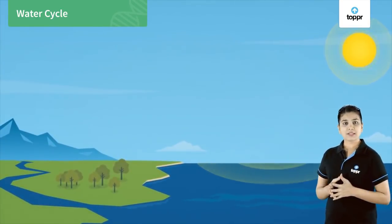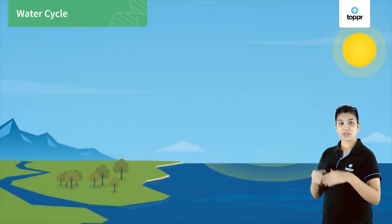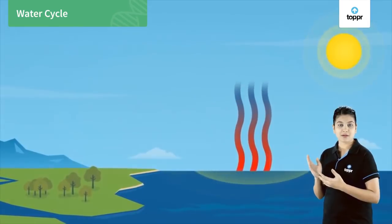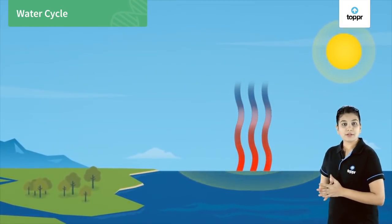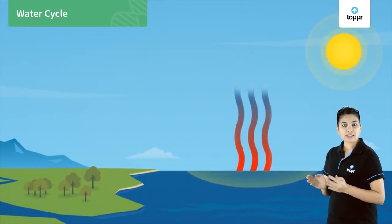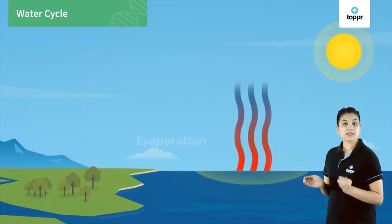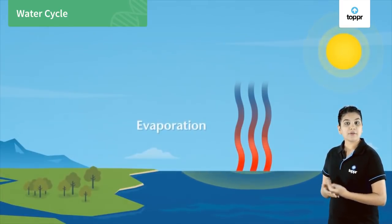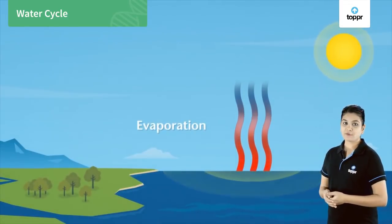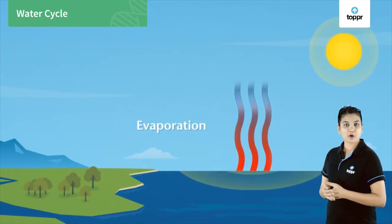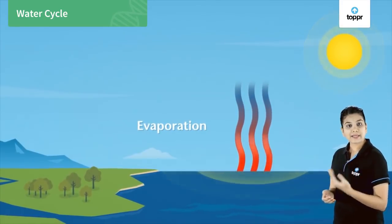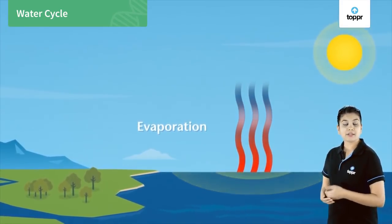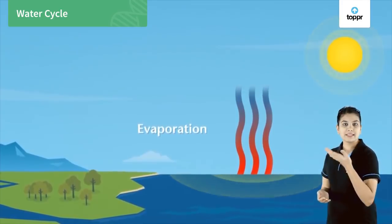Firstly, when the sun shines, with the heat of the sun the water on the earth's surface evaporates. It evaporates in the form of water vapor. These water vapors, being lighter than air, rise up.